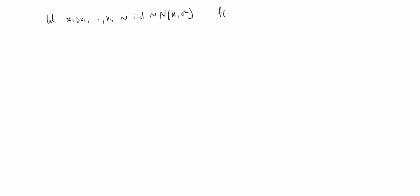The probability density function for the normal distribution is as follows. f of x as a function of mu and sigma squared equals 1 over the square root of 2 pi sigma squared, multiplied by the exponential of minus (x minus mu) squared divided by 2 sigma squared.